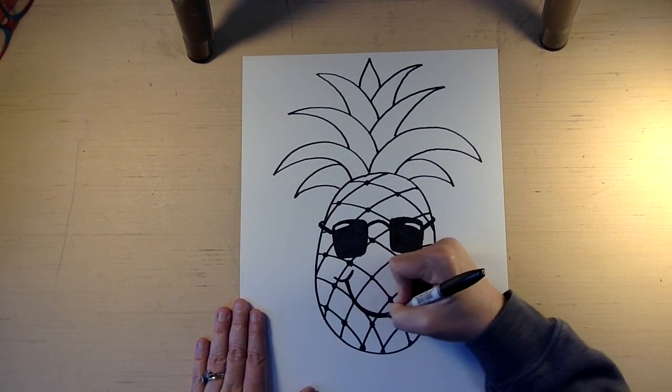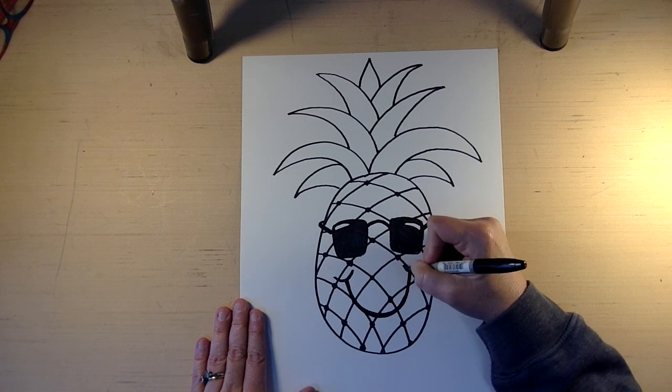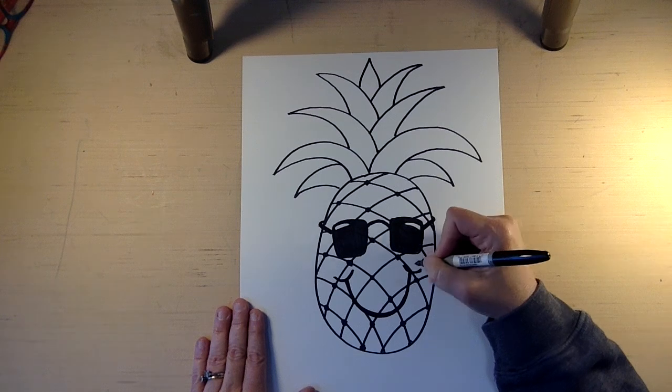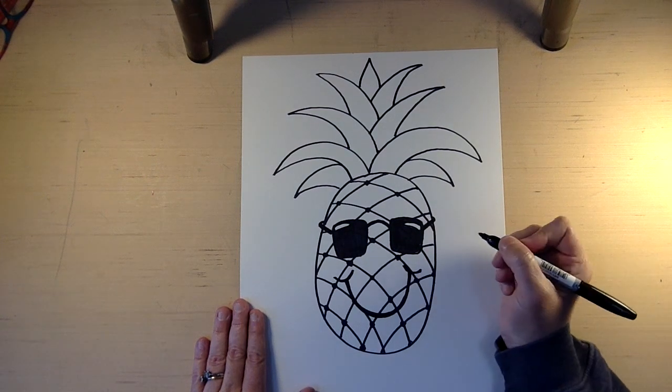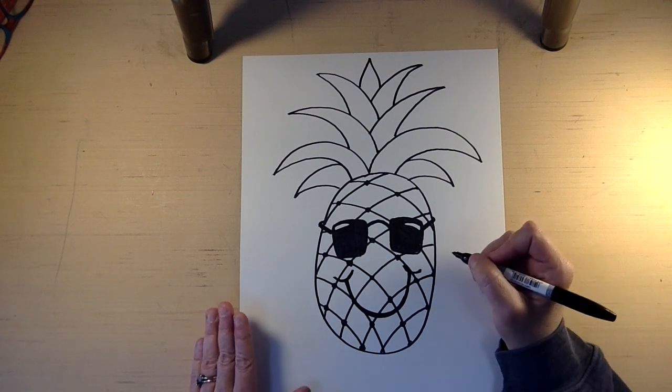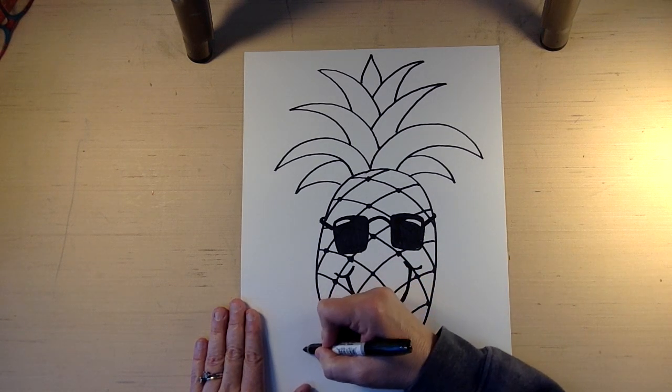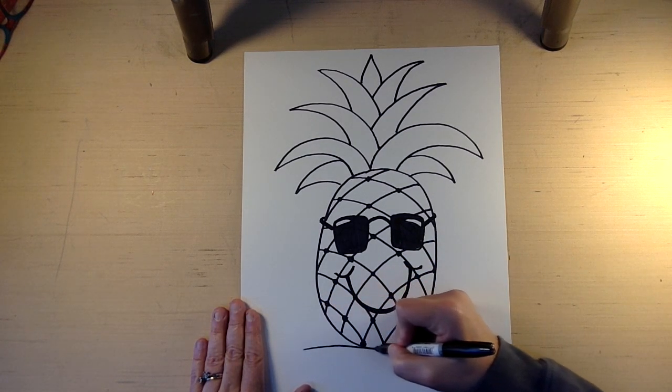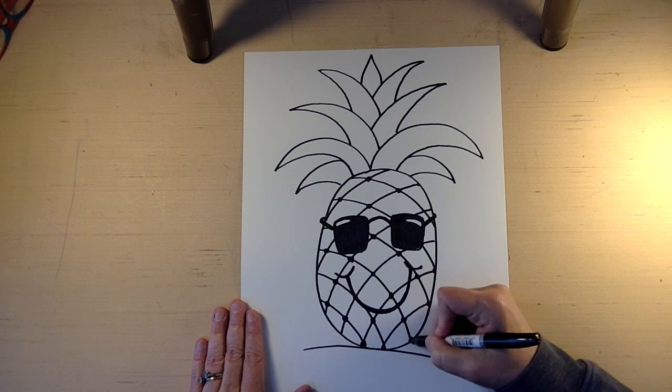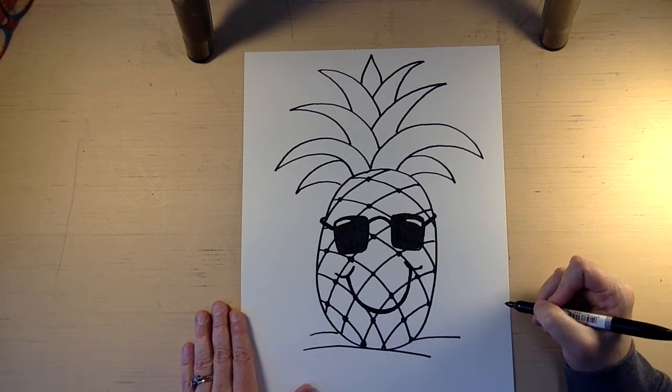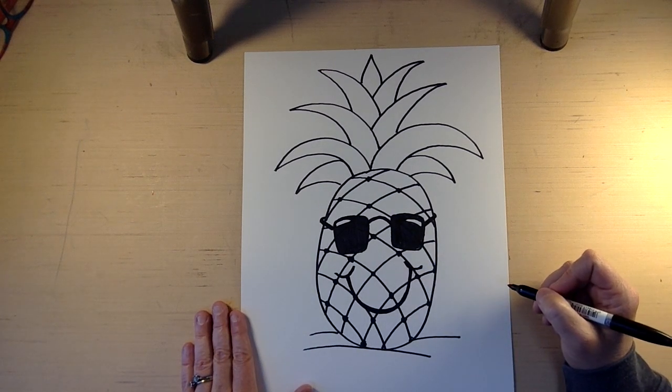It's kind of hard to see our smile with the lines in the background, but with you using different colors, you can make the lines brown and make your smile black or something like that and make it stand out. So it looks like our pineapple is kind of floating in air. So we want to ground him. We're just going to put some lines right here. So now it looks like he's sitting on something.